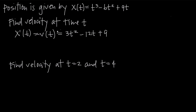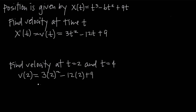Now we're asked to find velocity at specific times t equals 2 and t equals 4. After 2 seconds, we plug t equals 2 into the velocity function. V of 2 equals 3 times 2 squared minus 12 times 2 plus 9. That gives us 12 minus 24 plus 9, so v of 2 equals negative 3.